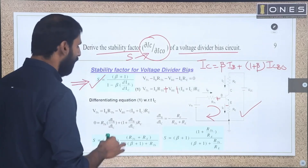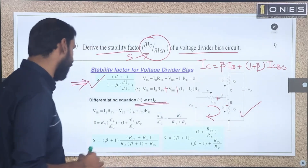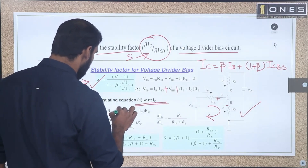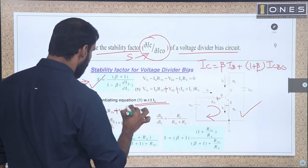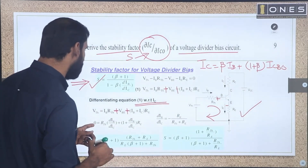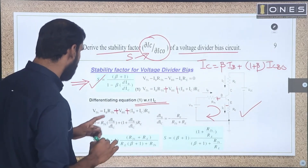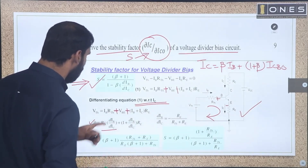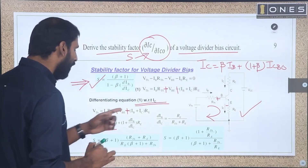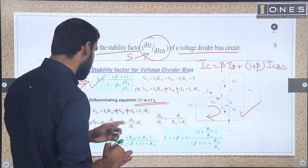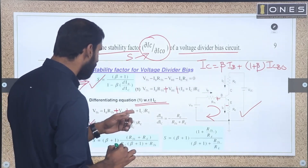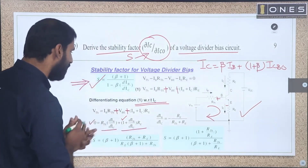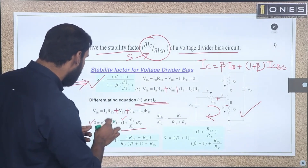From this VTH expression, we differentiate with respect to IC. VTH differentiated with respect to IC gives 0. The result gives us dIb/dIc. Differentiating: VBE term gives 0, then for (IB plus IC) times RE, differentiating IC gives 1 and IB gives dIb/dIc times RE. Solving gives dIb/dIc equal to minus RE divided by (RTH plus RE).